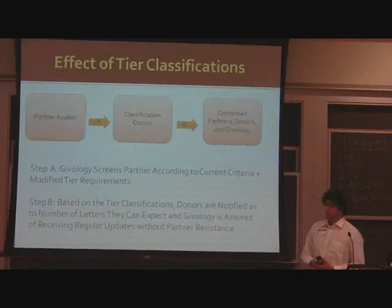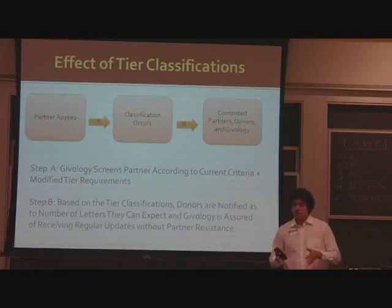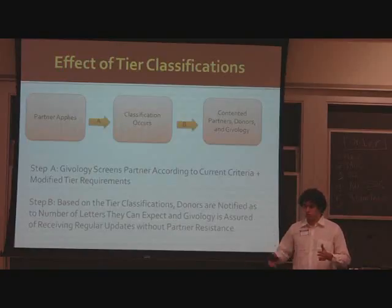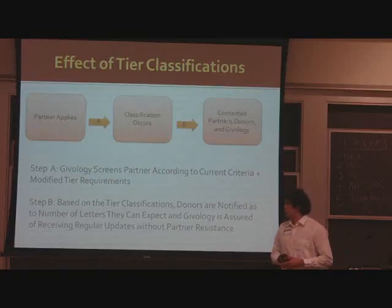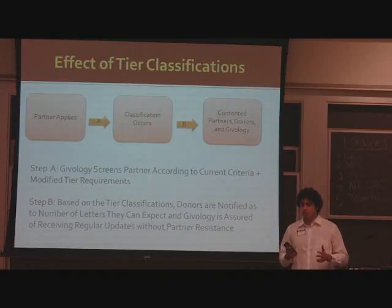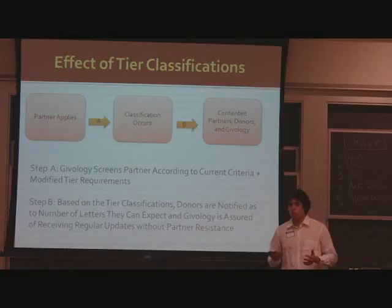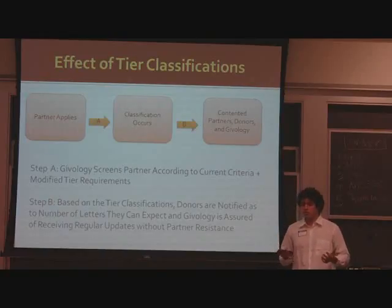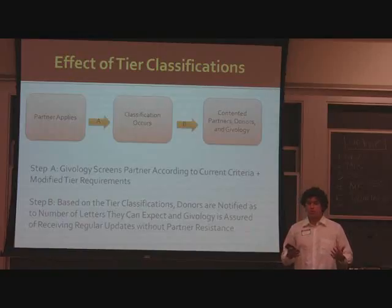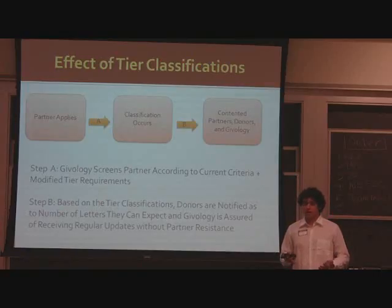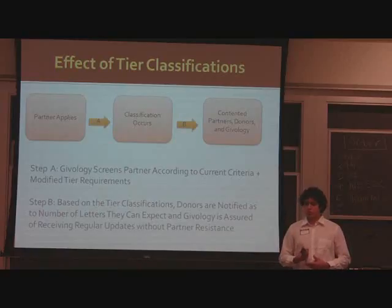The final effect of this proposal will be that the farmers will apply as they are applying now, and then they will be screened and classified into one of these three tiers according to their technology and capabilities. The donors will be informed of the limitations of each NGO, so in the end the farmers will be happy because they will be able to meet the requirements, and the donors will be happy because they will receive the number of updates promised and won't lose the emotional bond with the students.